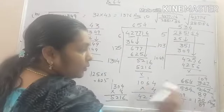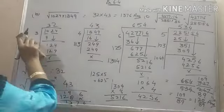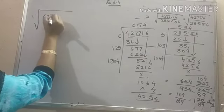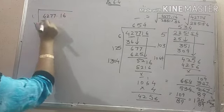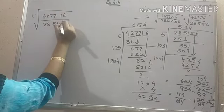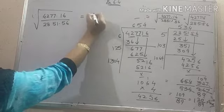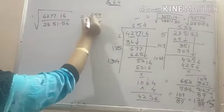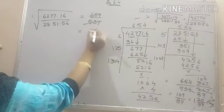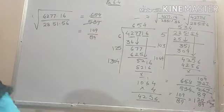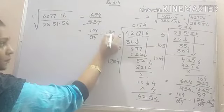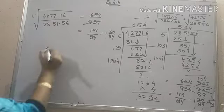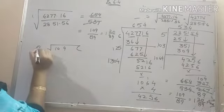Converting it into mixed fraction we get 120 by 89. One thing I must add on in this that you need to convert it into decimal. So let's see. So given to us 4277.16 upon 2851.56. And we calculate it as 654 by 534. Which on cancelling we get 109 by 89.